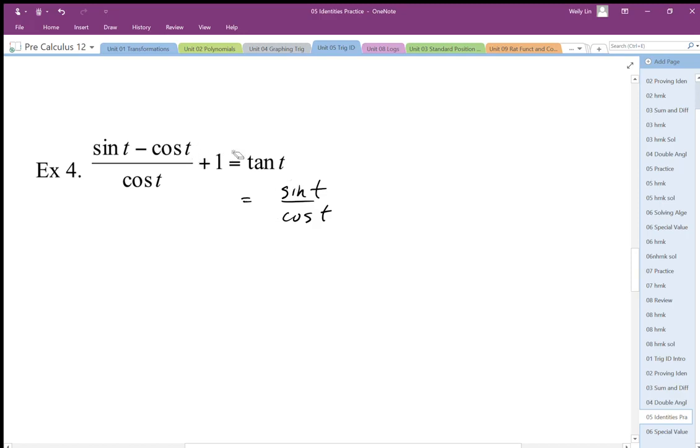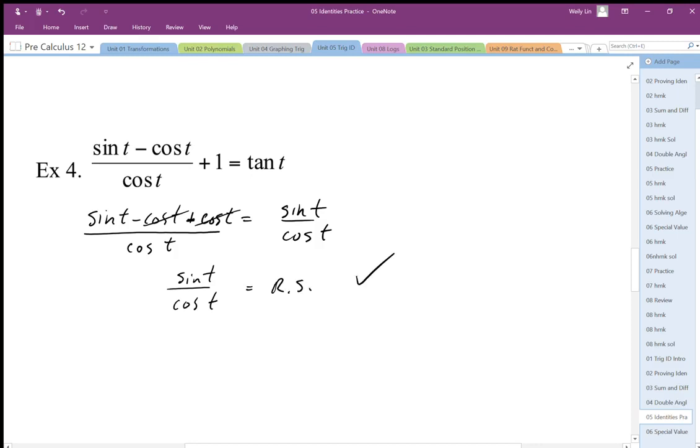I need to maybe—I have one fraction here and I have two fractions here, two terms here. So I'm going to make that into a common denominator and just combine it. And so once I do that, this actually solves itself pretty easily because sine t minus cos t, plus cos t over cos t, which is one. Well, those two cancel out. And then I'm going to end up with sine t over cos t equals the right-hand side. Again, identities proven.